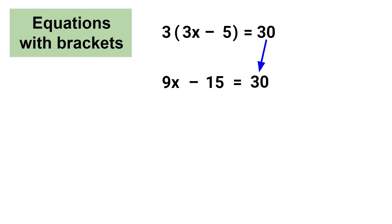Now that the brackets have been properly removed, we can continue with solving the equation. The goal is to isolate the variable, meaning we need to get the variable by itself. We need to get rid of the coefficient 9 and the constant 15. To do this we need to do reverse order of operations, which means we first need to remove the constant 15.